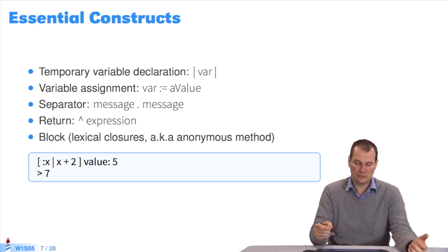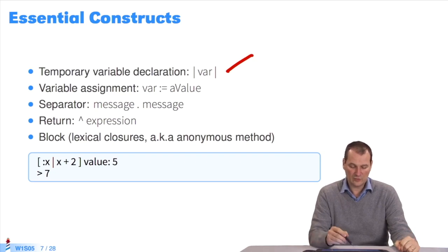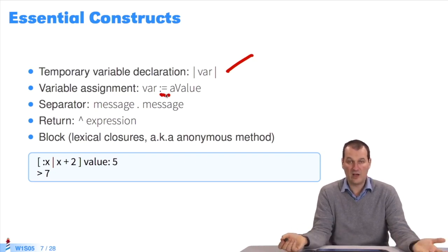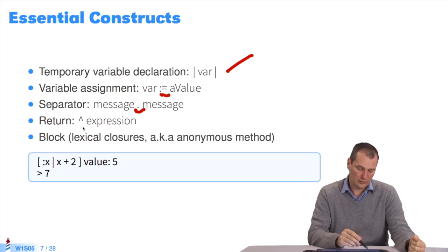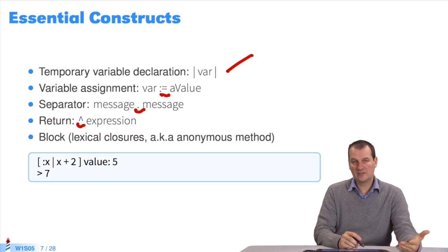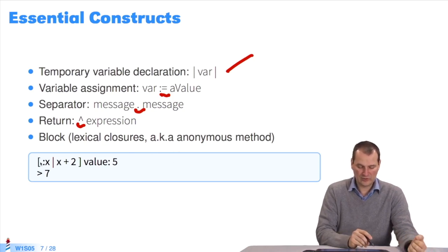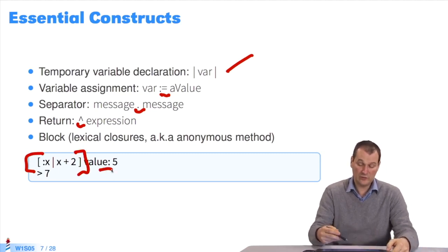Now we have the constructs of the language. You have temporary variable declaration — it's a vertical bar followed by another vertical bar. Assignment is a colon and an equal sign: in the variable var1, put a value. I have messages in my system — how do I separate them? With a full stop. When I want a sequence of messages, there's return, where a function or method gives a value — I use the little hat, which is called caret in English. Then you have blocks, which technically speaking are lexical closures, and which you can take as anonymous methods. A block is defined with square brackets and it's executed with the message value. There you have all the constructs.